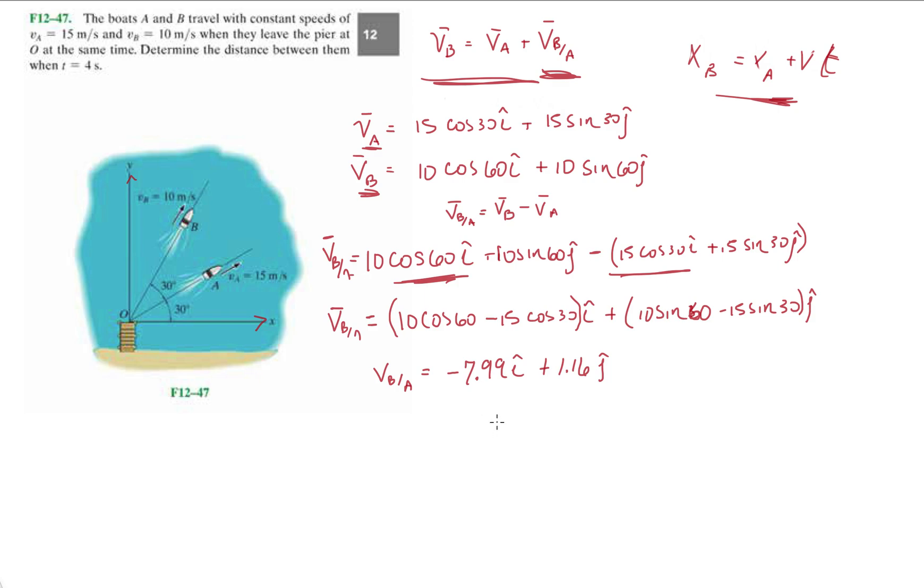If we take the magnitude, we're just looking at 7.99 squared plus 1.16 squared. Again, it doesn't matter the negative is not in here because you're squaring it. This gives you 8.07 meters per second.